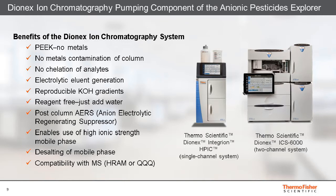Additional advantages of the direct ion chromatography system include the inertness achieved using PEEK and no metals along all analyte pathways. The metal-free IC system eliminates issues of polar analyte adsorption by metal ions leaching from the LC system. Reagent-free electrolytic eluent generation removes tedious mobile phase preparation, and gradients generated in situ using the eluent generator cartridge are extremely reproducible, resulting in very stable retention times.